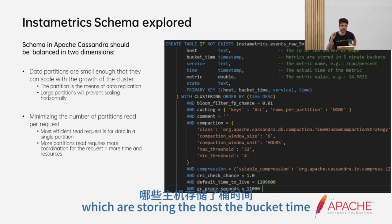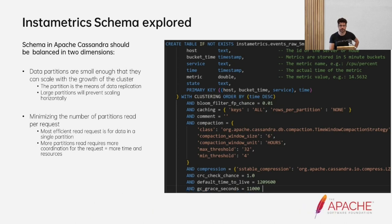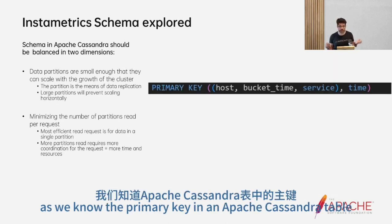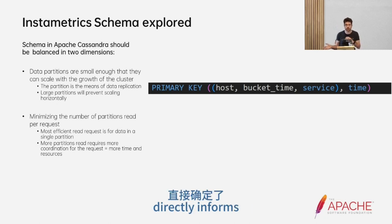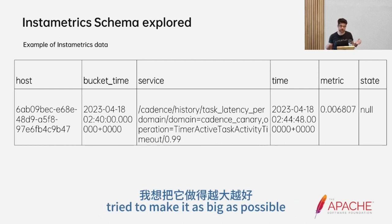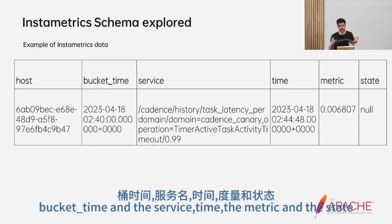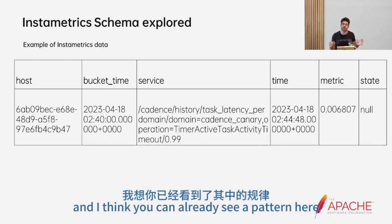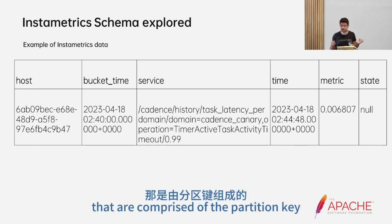First, we need data partitions that are small enough that we can scale and move them around with cluster growth. If the partition key is too broad, the data all falls into a small number of partitions, and at some point the number of partitions will be less than the number of available nodes and we can no longer scale. The other thing to balance is minimizing the number of partitions read per request, because the more partitions you read in a select statement, the slower the performance. On the right-hand side you can see an excerpt of the schema we used for our InstaMetrics cluster, with fields storing the host, bucket time, metric name, and some other information.